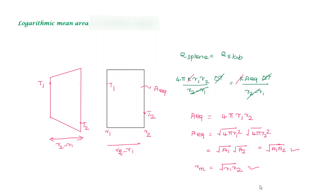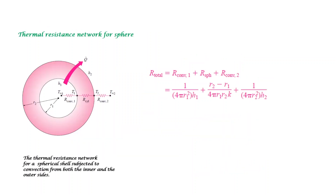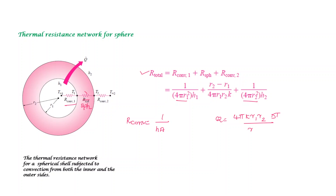For the thermal resistance network of a sphere: if there is a fluid inside with convection resistance, and convection resistance outside, total resistance = R_convection(inner) + R_sphere(conduction) + R_convection(outer). Convection resistance is 1/(h·A). Conduction resistance for the sphere is R_sphere = (r2 − r1) / (4πk·r1·r2). This follows from Q = 4πk·r1·r2·ΔT / (r2 − r1), so Q = ΔT / R, giving R = (r2 − r1)/(4πk·r1·r2).